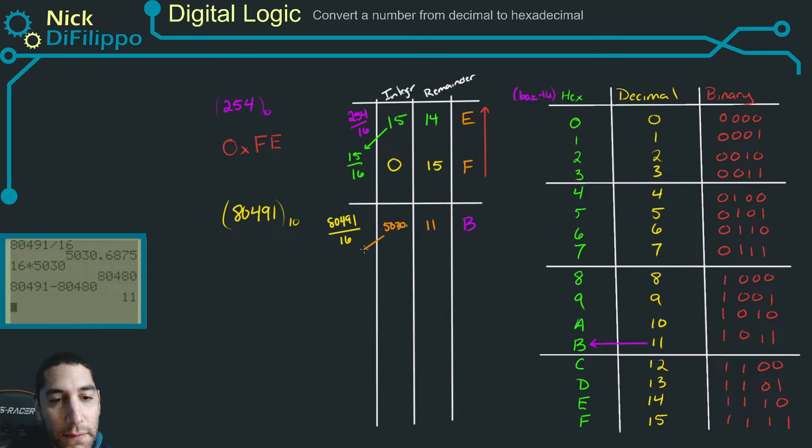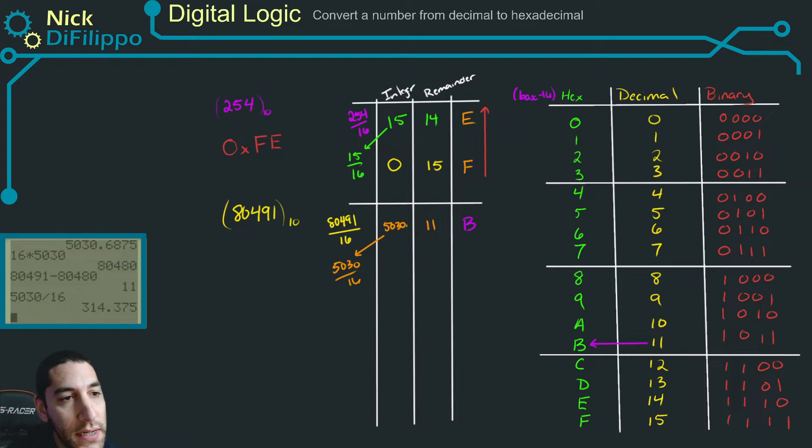So now I take my integer 5,030 and divide that by 16. And I get that's equal to 314. Now, what's this remainder? So 314 times 16, 5,024, 5,030. The difference is six.